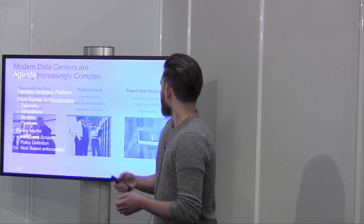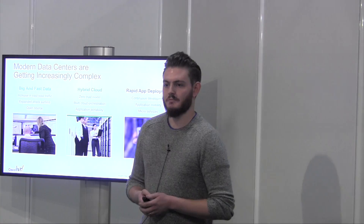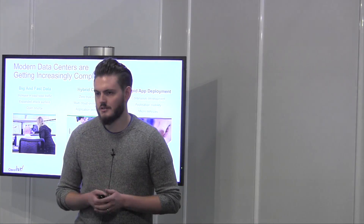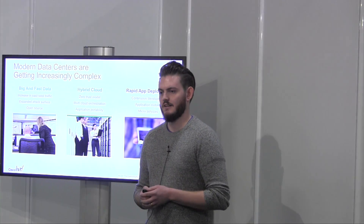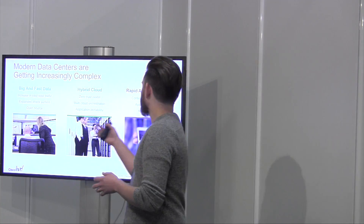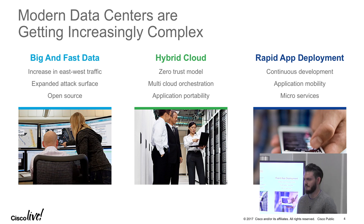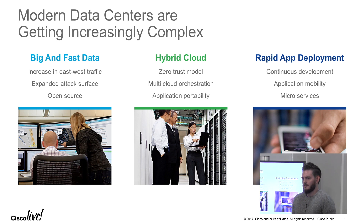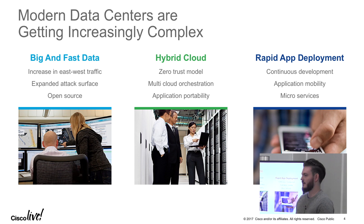Tetration is built by the INSBU team — the team behind ACI and the Nexus 9000 switches. Based on customer feedback, a couple of themes kept coming up. First, there's a lot of data flowing in the data center that customers want to monitor. Data traditionally flowed north to south, but we've observed a heavy shift to east-to-west traffic, whereas traditional monitoring tools are often designed for north-to-south. Tetration is designed from the ground up to handle that east-to-west traffic and the explosion in data volume.